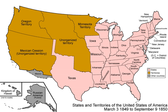The Compromise of 1850 was a package of five separate bills passed by the United States Congress in September 1850, which diffused a four-year political confrontation between slave and free states on the status of territories acquired during the Mexican-American War.